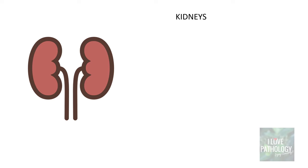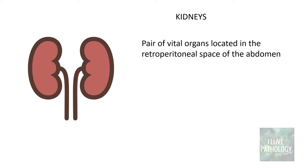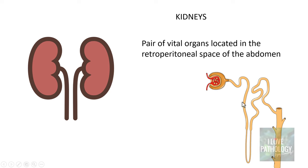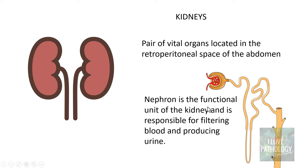We all know kidneys are a pair of vital organs which are located in the retroperitoneal space of the abdomen. The functional unit of the kidney is the nephron, which is responsible for filtering blood and producing urine.